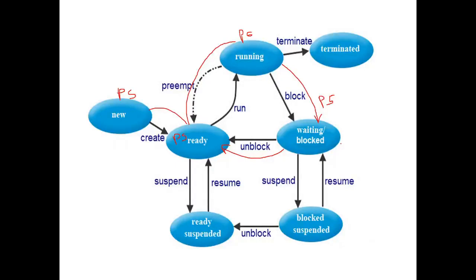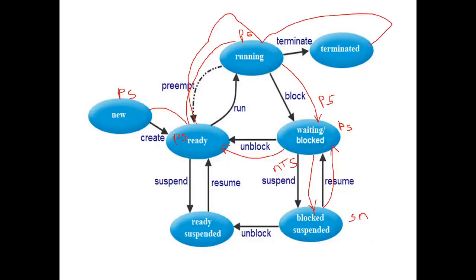If the resources are not available, instead of waiting in main memory, process P5 is moved to the block suspended state — it is temporarily suspended in secondary memory. This is done by the medium-term scheduler (MTS). Whenever the resources become available, the process is moved back to main memory, it executes, goes to the ready queue, then back to running, and finally terminates. The MTS acts to move processes between main memory and secondary memory.